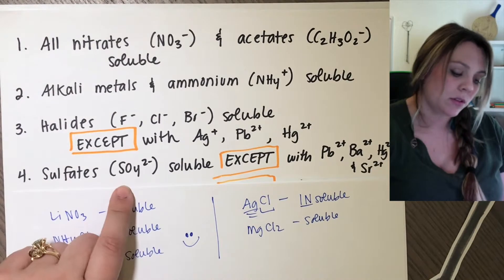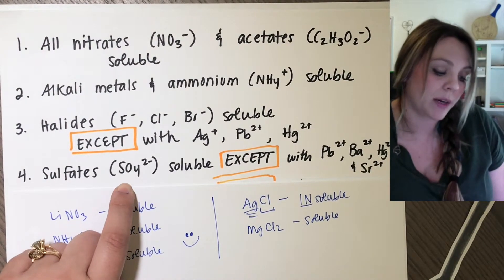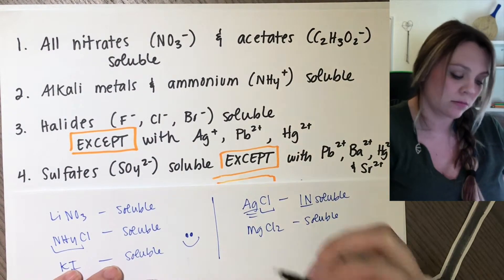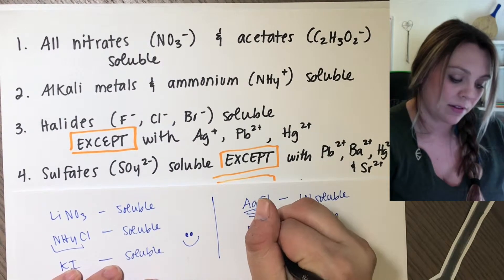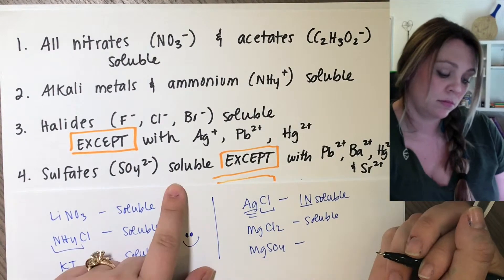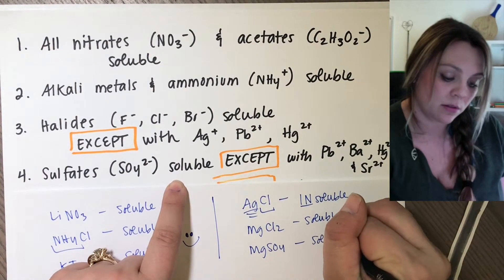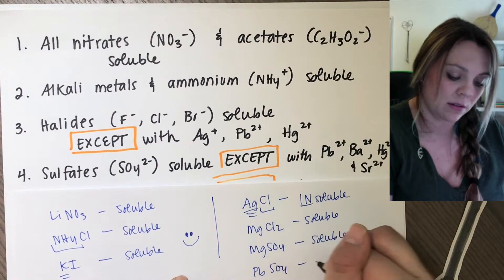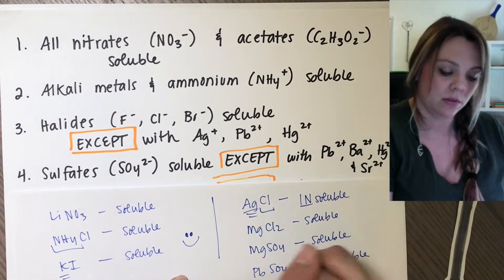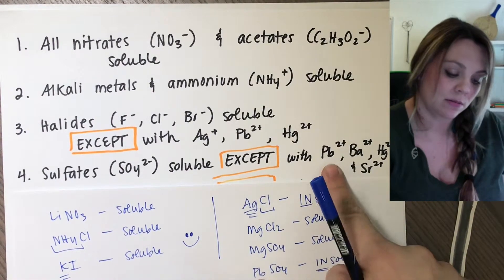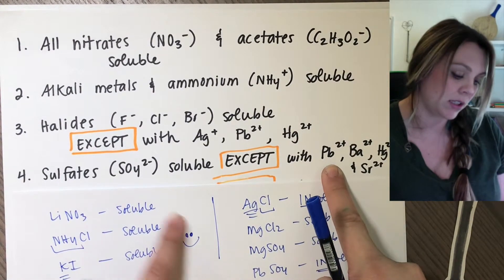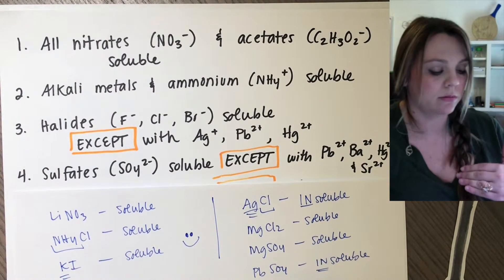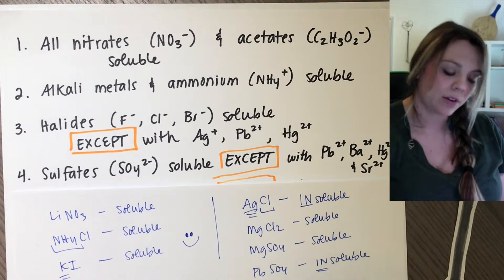Same thing. So sulfates, SO4 with a two minus charge. Those are soluble unless it's bonded to these things. So I can have magnesium sulfate. That should be soluble. If I had lead two sulfate, it's insoluble because lead two bonded to my sulfate means it's an exception to the rule. It will not dissolve.